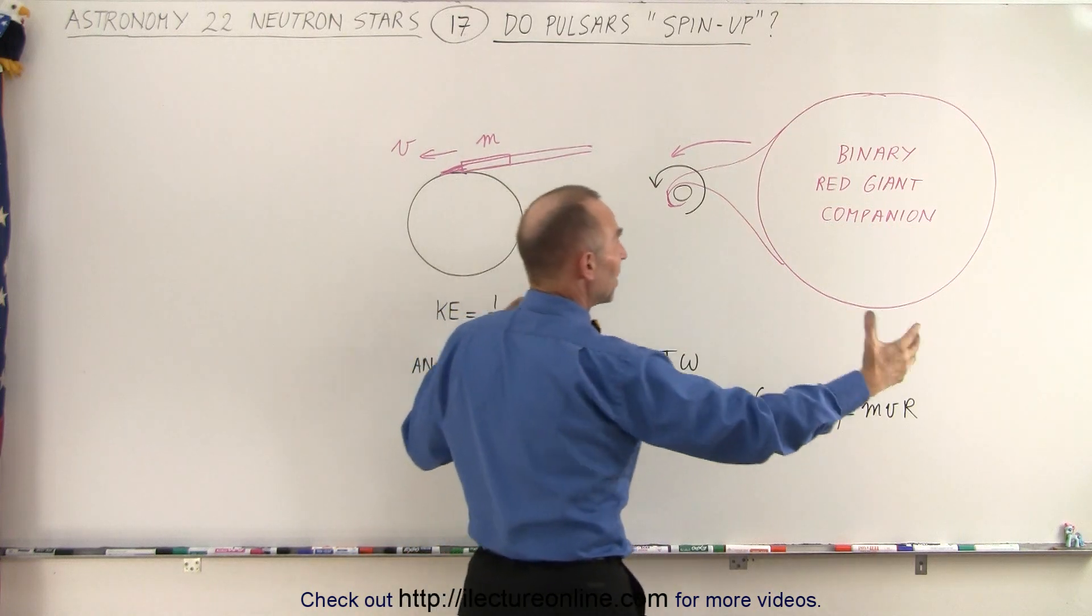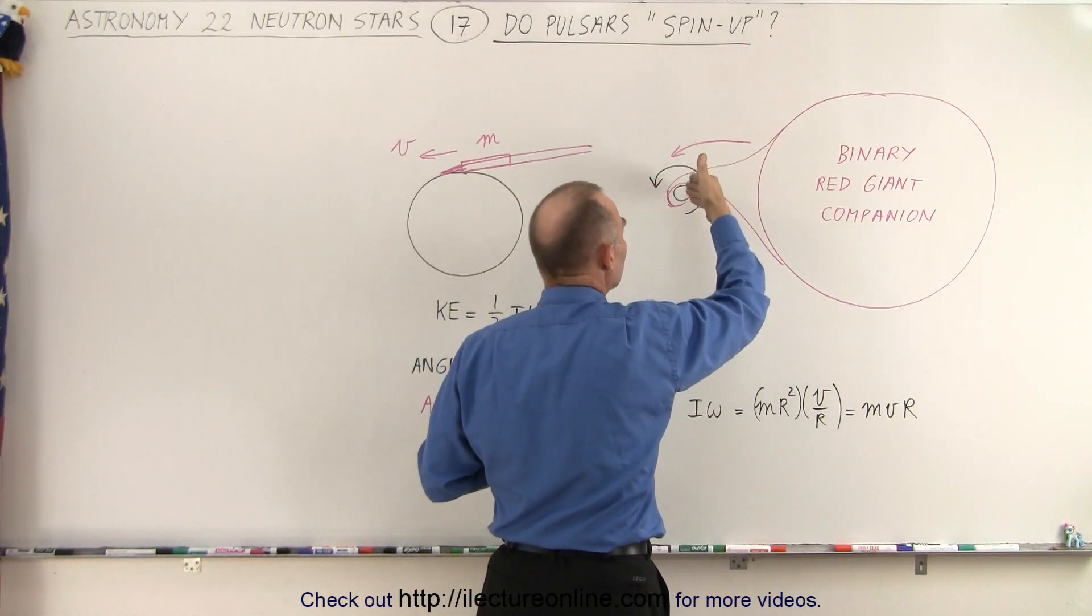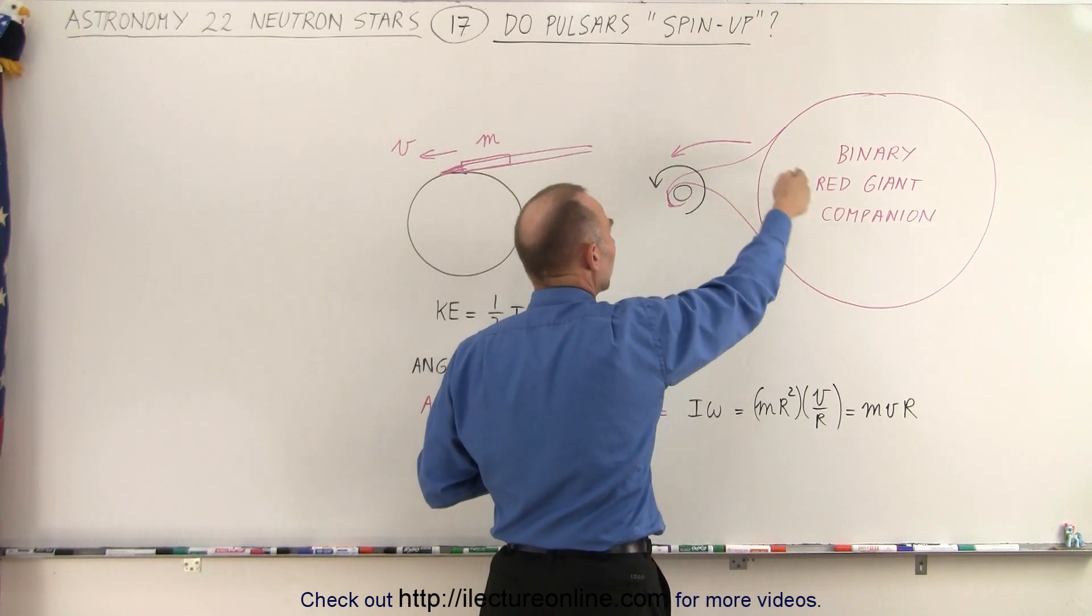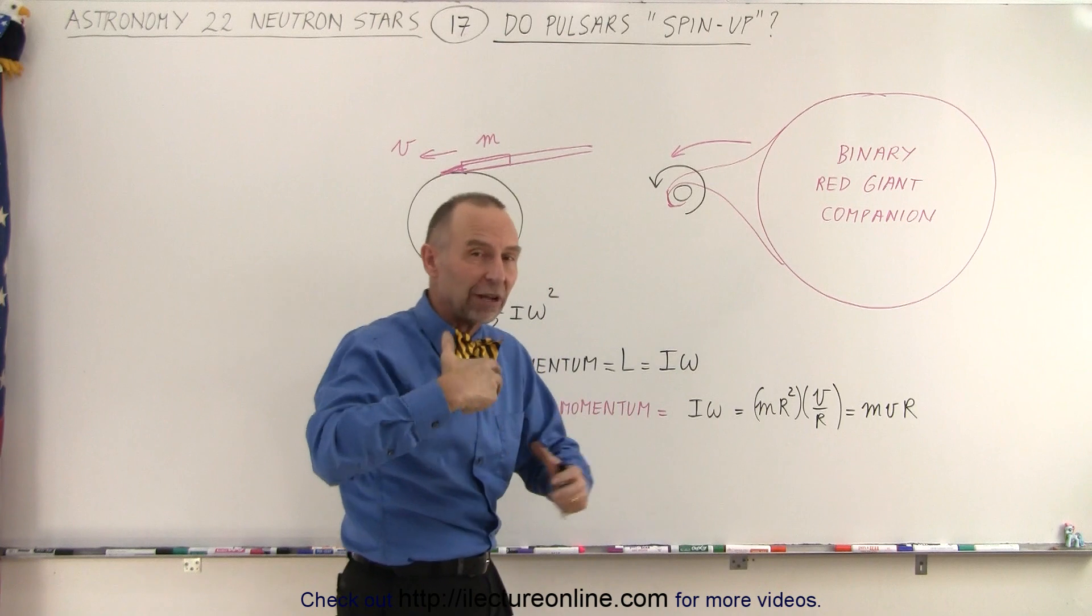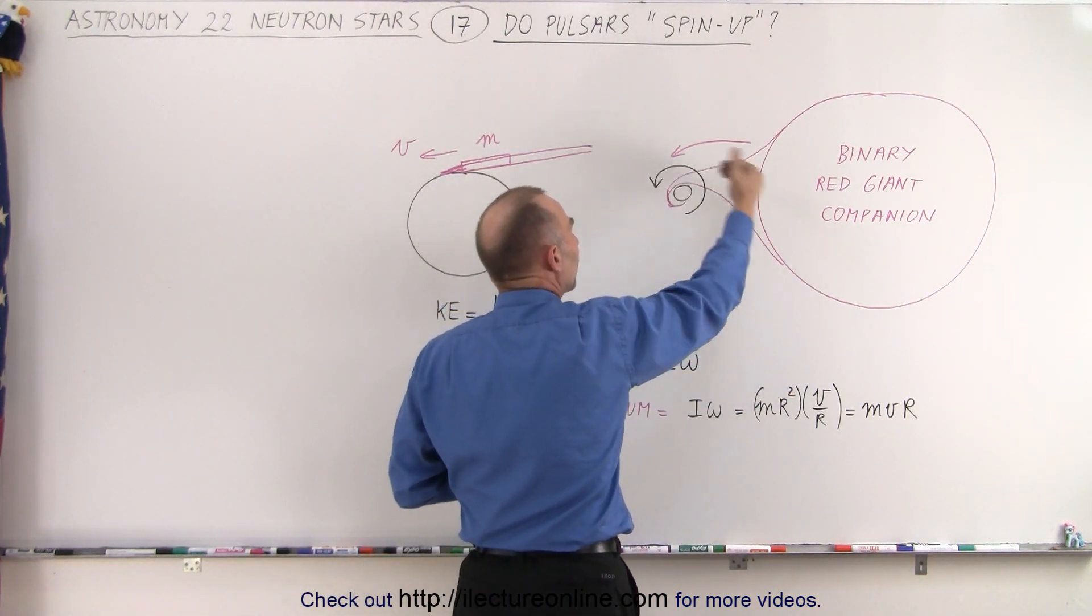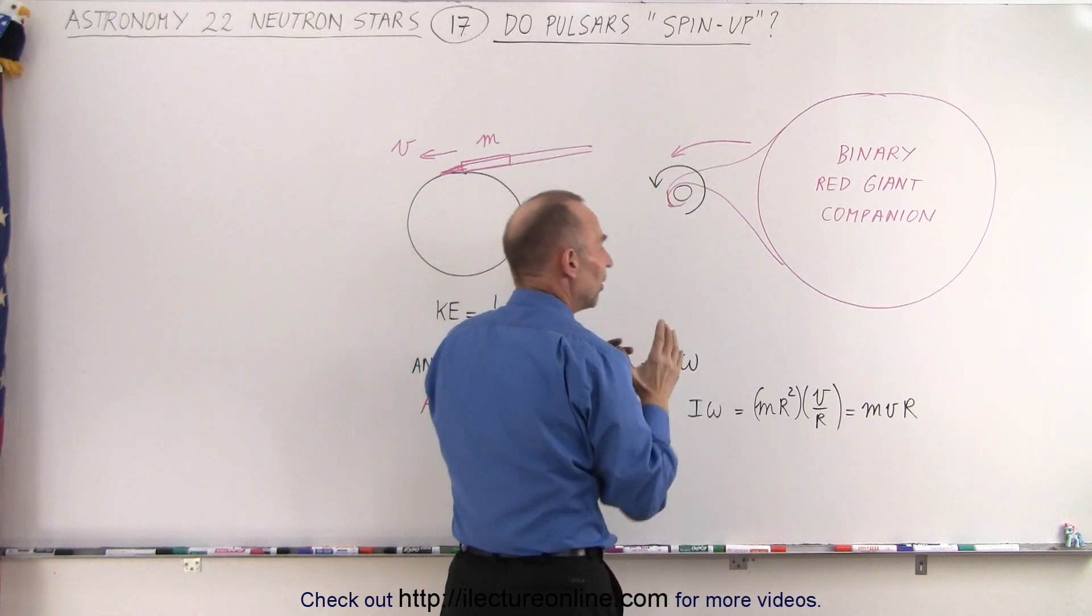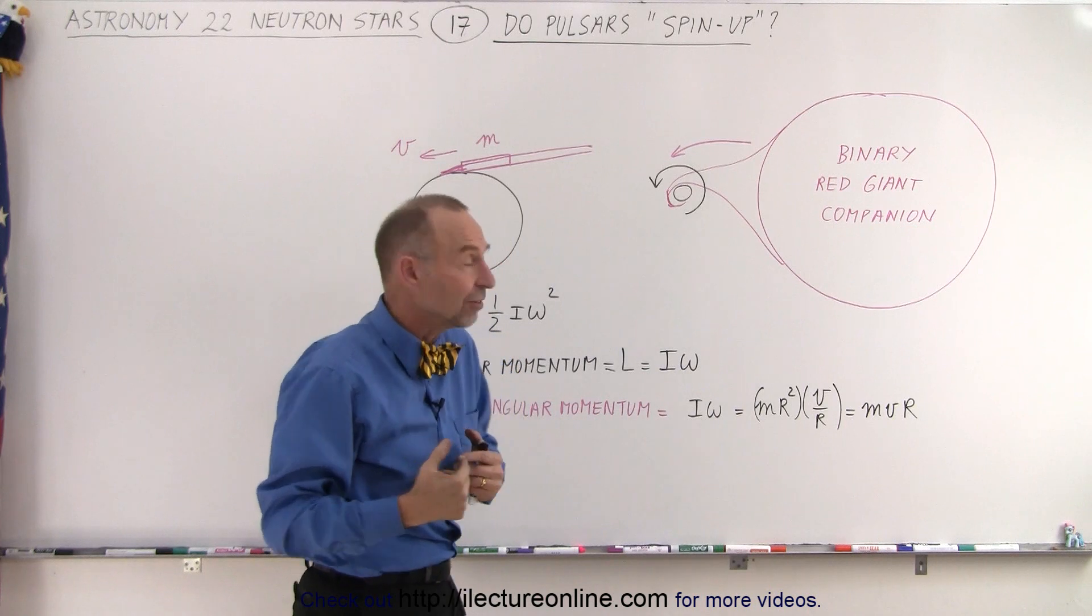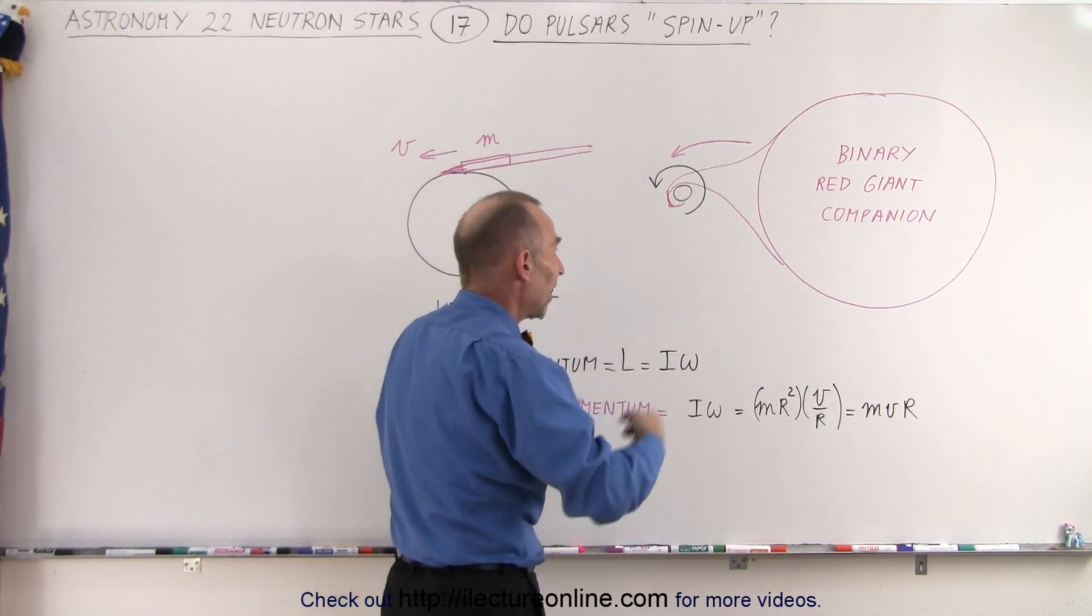A red giant swells up to tremendous size and the outer layers may be close enough to the pulsar, the neutron star, to pull off some material off the star. Depending upon the direction of magnetic field, the spin, and so forth, if the material comes in the same direction and adds on to the pulsar in the same direction as the spin of the pulsar, then it's an additive process and it can actually cause the pulsar to spin up and start spinning faster and faster.